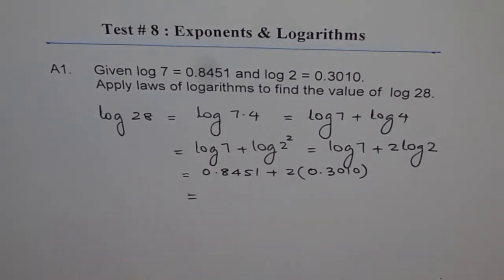So we have 0.8451 plus 2 times 0.3010 equals 1.4471.